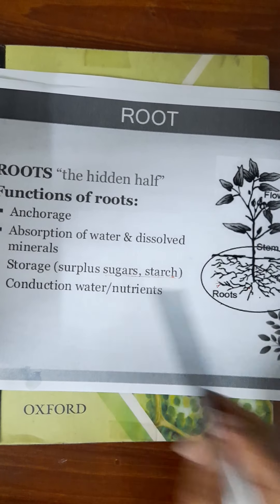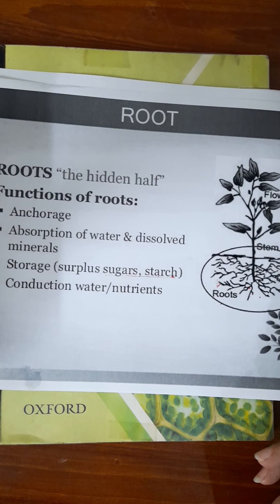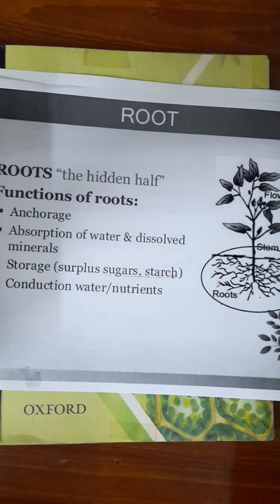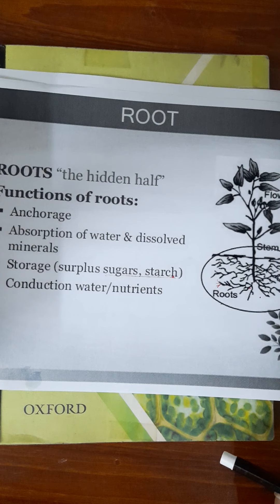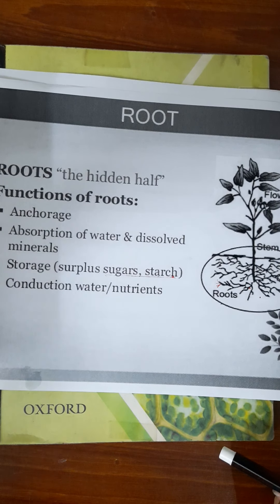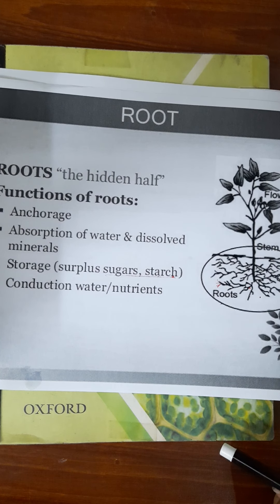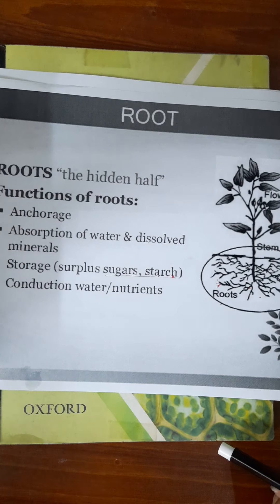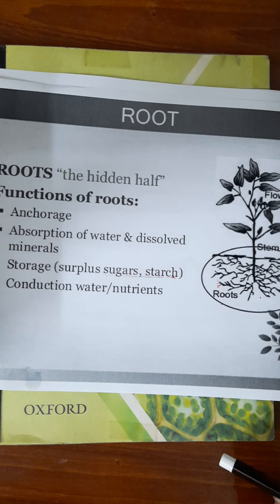Roots are also a storage house, just like the stem. For example, the carrot is a root. Food is made in the leaves of the carrot plant, but the excess is stored in the carrot root. So roots are also a site where food is stored.